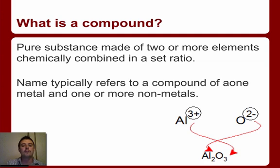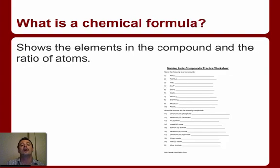A compound is a pure substance made of two or more elements, chemically combined, in a set ratio. This name typically refers to compounds of one metal and one or more non-metals, typically what's called an ionic compound.